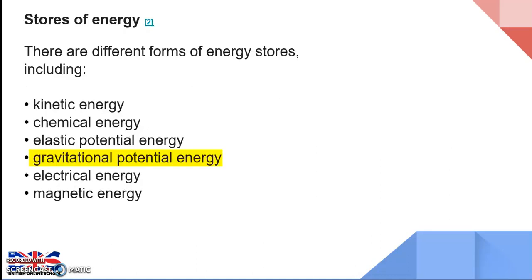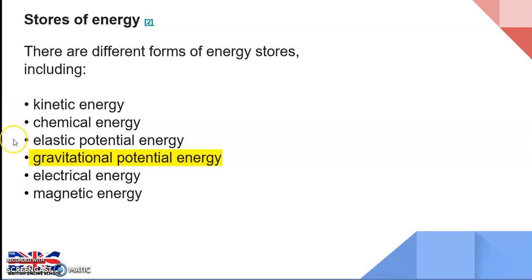There are many forms of energy stores, a lot of which we've met in previous years in Key Stage 3 science. We've looked at kinetic energy — that's movement energy. We've seen that there's chemical stored energy, stored in chemicals such as food or chemicals used in science experiments. Elastic potential energy we're going to cover in a later lesson. Today we're looking at gravitational potential energy.